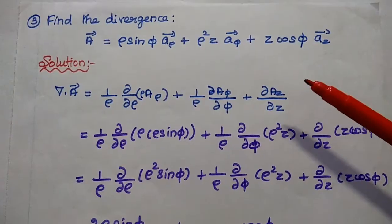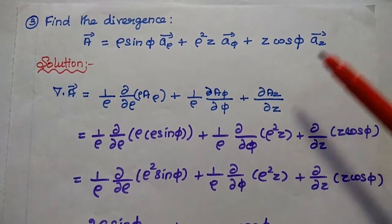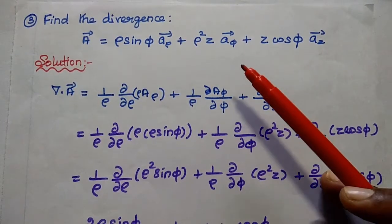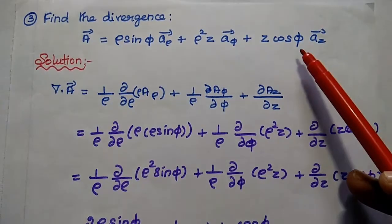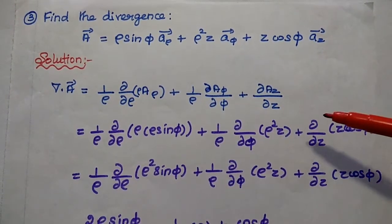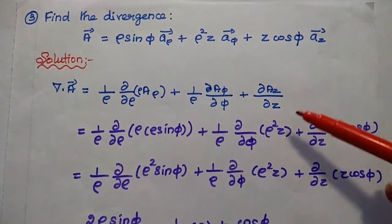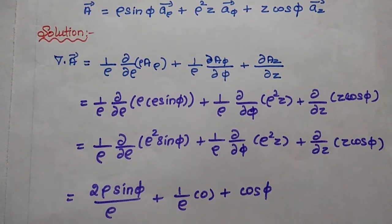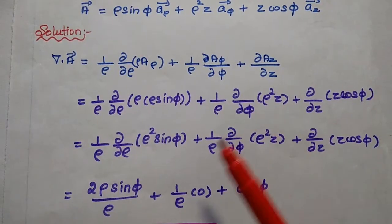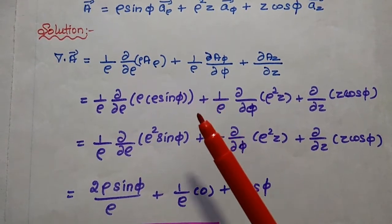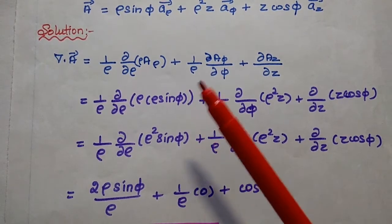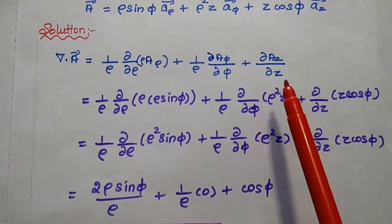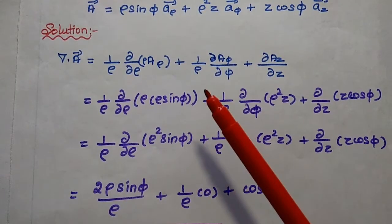The next problem: find the divergence of the vector A = ρ sinφ â_ρ + ρ²z â_φ + z cosφ â_z. Since the coordinates are ρ, φ, z, this is in the cylindrical coordinate system. We use the cylindrical divergence formula: del dot A = (1/ρ) ∂/∂ρ(ρ Aρ) + (1/ρ) ∂Aφ/∂φ + ∂Az/∂z.